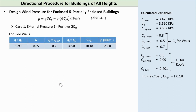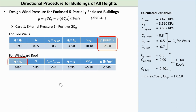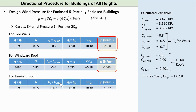For the side wall, using Q equals QH and CP equal to the side wall coefficient of negative 0.7, we get P equals negative 2,860 pascals. For the windward roof, using Q equals QH and CP equal to the windward roof coefficient CP1 which is negative 0.6, we get P equals negative 2,546 pascals. And for the leeward roof, Q equals QH and CP equals the leeward roof coefficient which is negative 0.401, giving P equals negative 1,922 pascals.